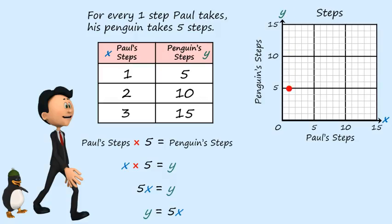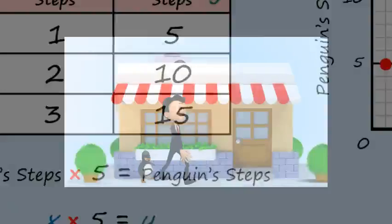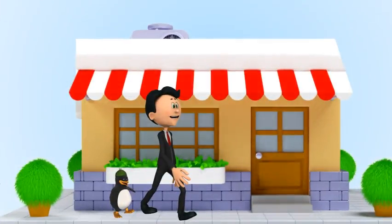For our next point, x equals two, y equals ten — that's two in the x direction and ten in the y direction. And lastly, we have three and fifteen. Let's look at another example involving Paul's penguin and Paul's pet pig.